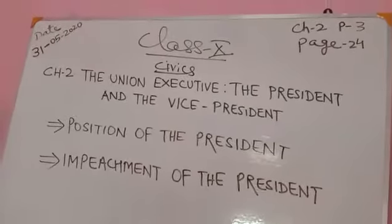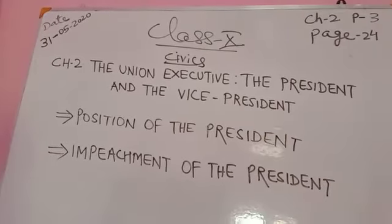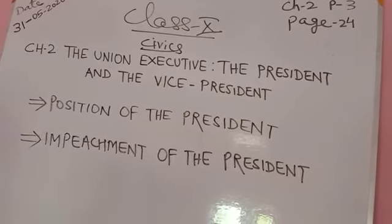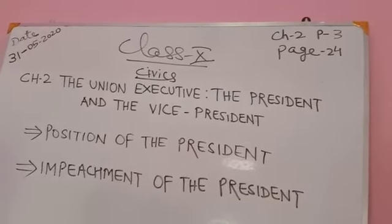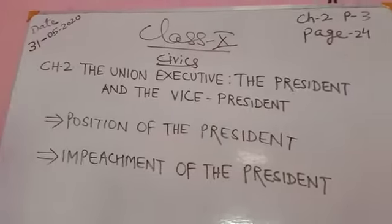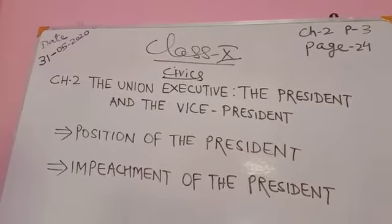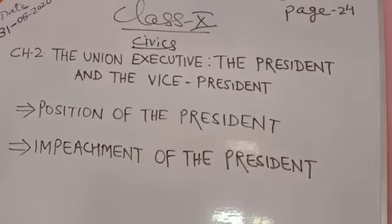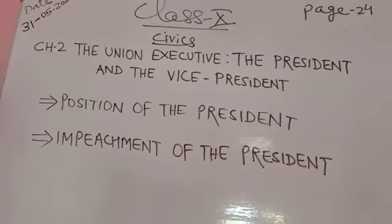Vacancy in the office of the president: What are the causes for the vacancy? The office of the president may be vacant for the following reasons: at the expiry of the normal term of five years, if he submits his resignation, if he dies, or if he is removed by impeachment.